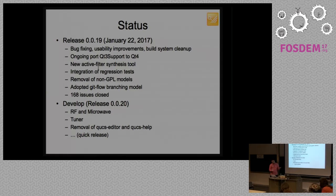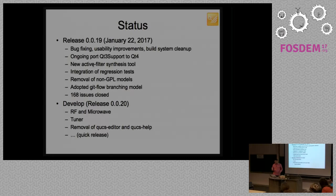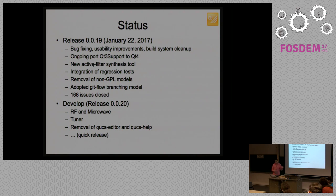To wrap up the slides, 0.19 was released. Mostly bug fixing. Cleanups. Ongoing porting from Q3 to Q4. There is this new tool. That's the main new thing that we have. We did integration. A bit of regression testing. We removed the non-GPL. We adopted a new Git branching model. Because, before that, we were merging everything into master. And, it was kind of untidy. Now, we have master only for releases. And, we have develop for development. And, on this release cycle, we closed roughly 160 issues. Regressions and things like that.